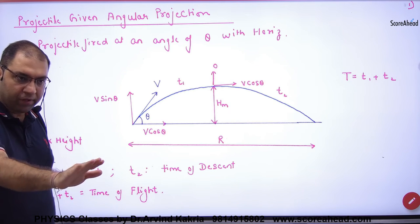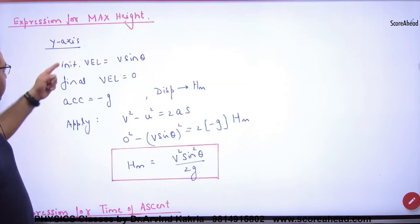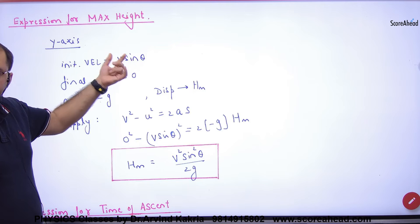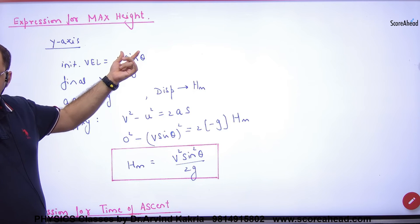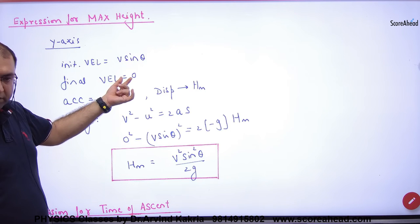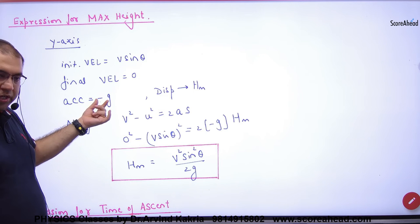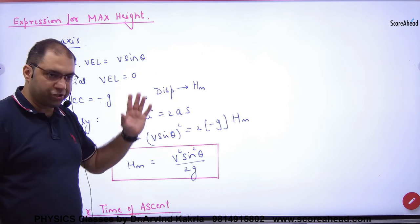So if we write y-axis, when the body went on the y-axis, then what is the initial vertical velocity? V sin theta. Topmost point final velocity zero. And what is the acceleration due to gravity? Minus g. And what is the height covered? H_m.